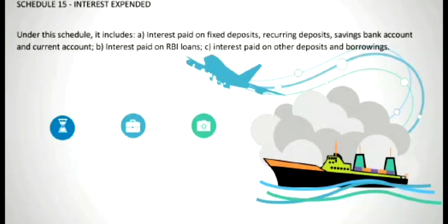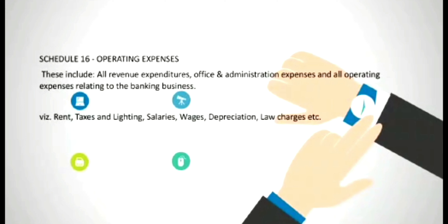Schedule 16 is about operating expenses. The expenses included in the schedule are all revenue expenditure, office and administration expenses, and all operating expenses relating to the banking business. Examples include rent, taxes and lighting, salary, wages, depreciation, law charges, etc.